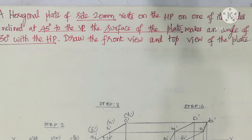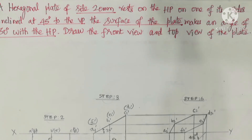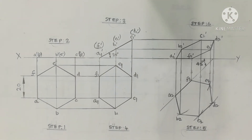Regarding the projection of planes, the given object is a hexagonal plate, which can also be called a hexagonal lamina, of side 20mm — each side is 20mm. The corresponding answer diagram is given in this video.